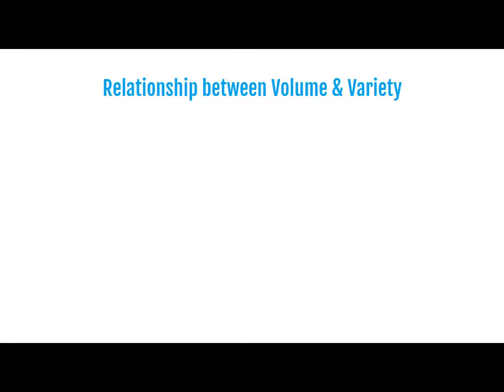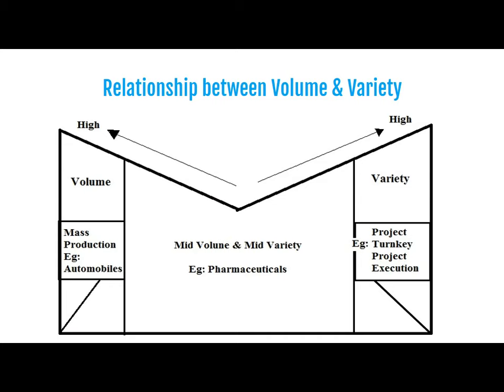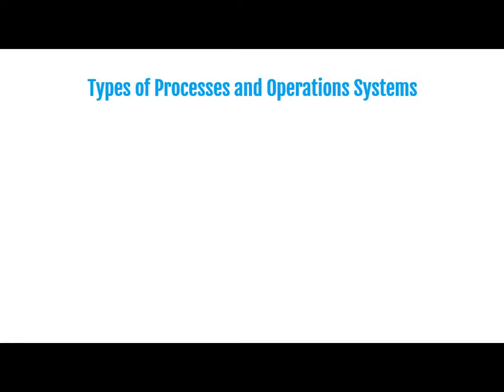Now we will understand the relationship between volume and variety. Naturally, when volume is high, variety is typically low — this is the example of mass production, such as the automobile sector with two-wheelers and four-wheelers, where volume is very high but variety is very low. In between, there are examples of the pharmaceutical sector, where mid-volume and mid-variety products exist. At the other end, there are examples of large variety but typically very low volume, such as any project execution, where variety is high but volume is only one or two products.